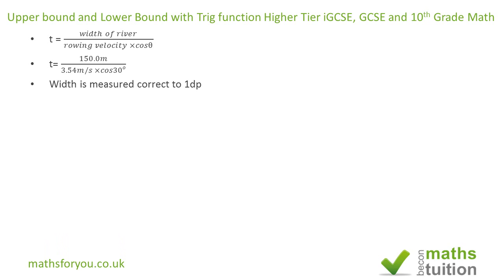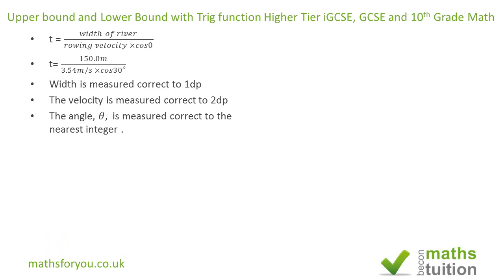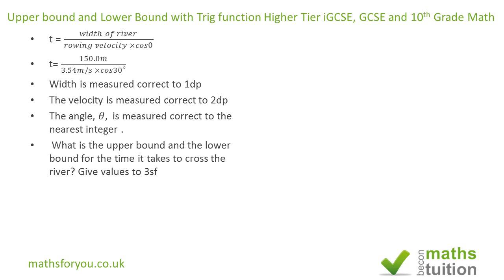We are told that the width of the river is measured correct to one decimal place, the velocity is measured correct to two decimal places, and the angle theta is measured correct to the nearest integer. We're asked to find both the upper bound and the lower bound for the time, giving the answer to 3 significant figures.